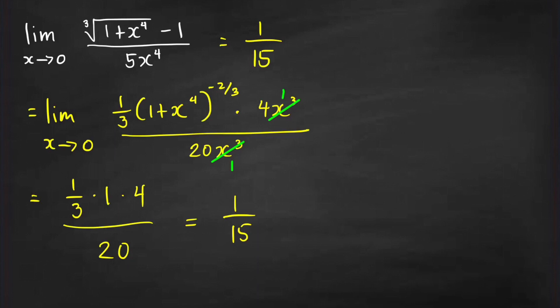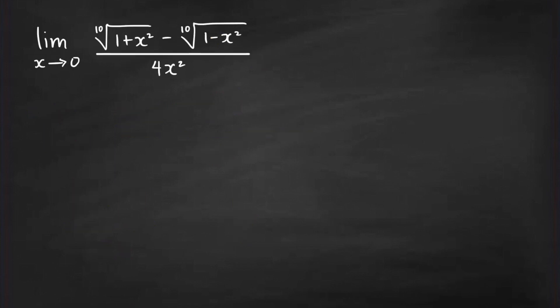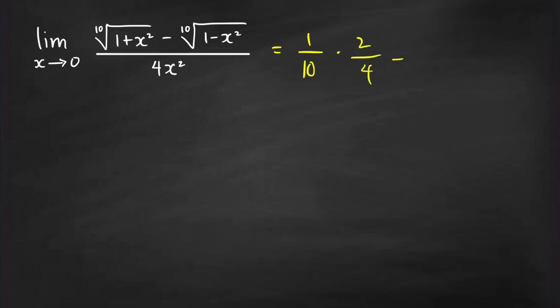So, how did I arrive at this answer quickly? Before I share my technique, let us first solve the second limit problem. We consider the limit as x goes to 0 of this radical expression over 4x squared. Again, we have a limit of the form 0 over 0. Just by looking at this expression, I can already determine the limit. And it is equal to 1 over 10 times 2 over 4, which is equal to 1 over 20.